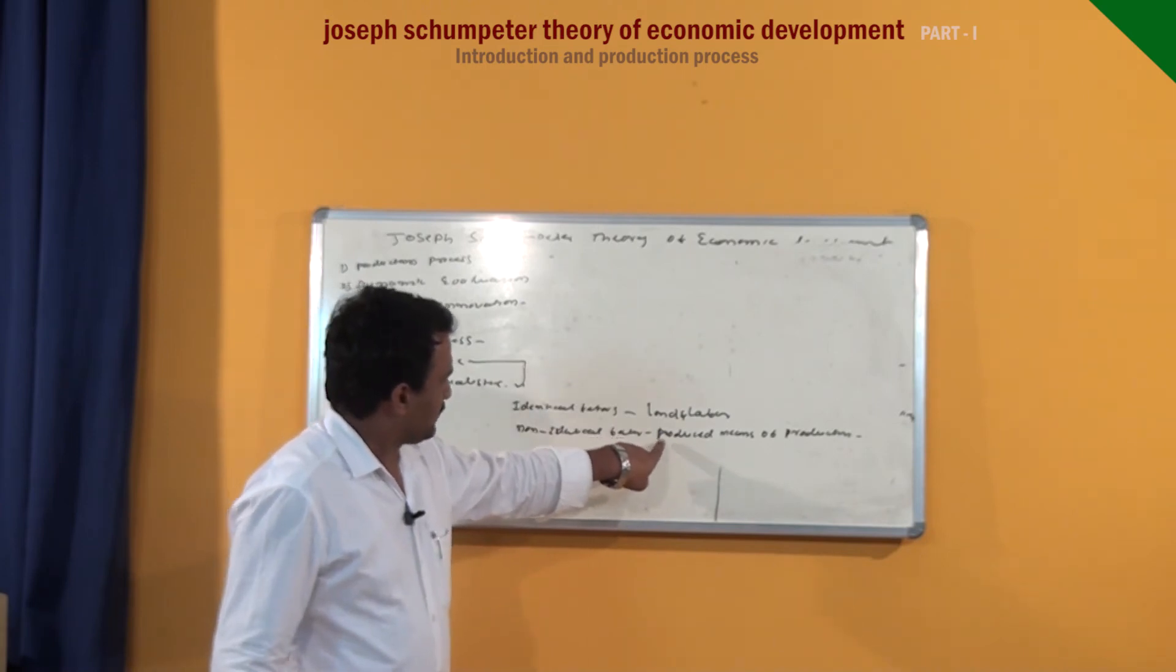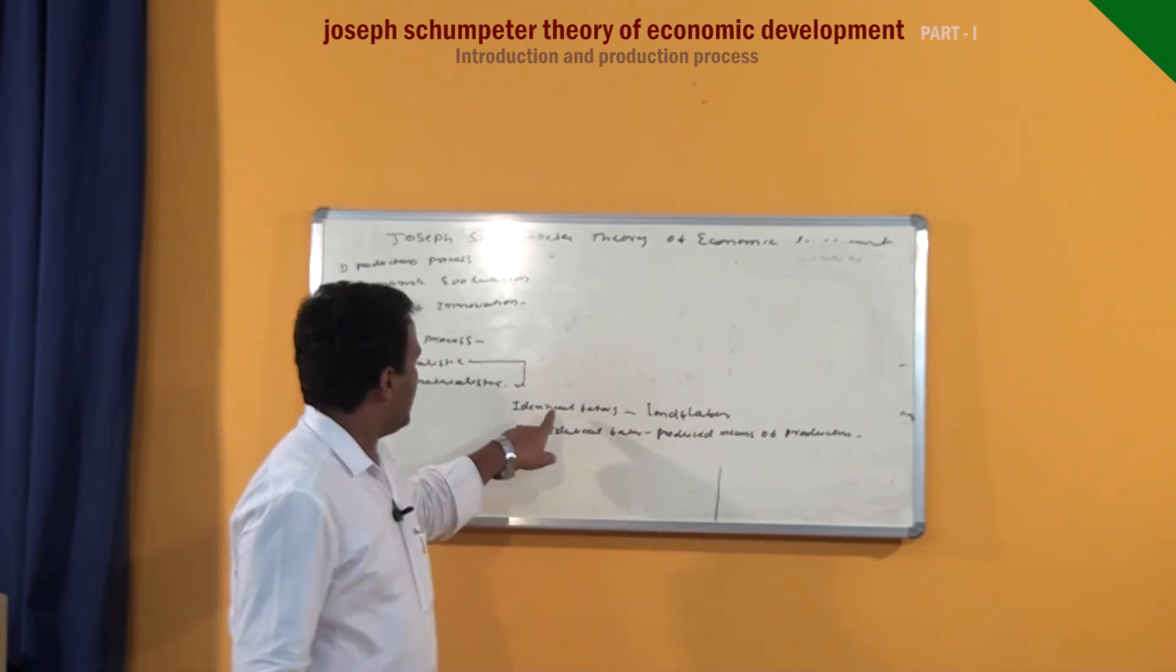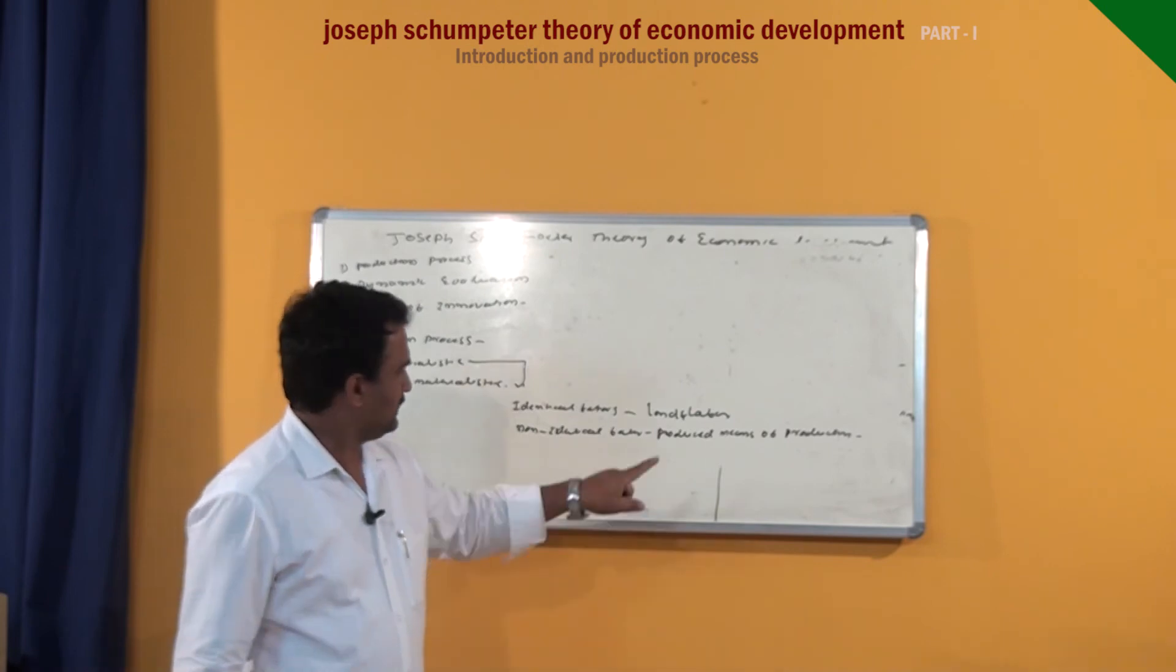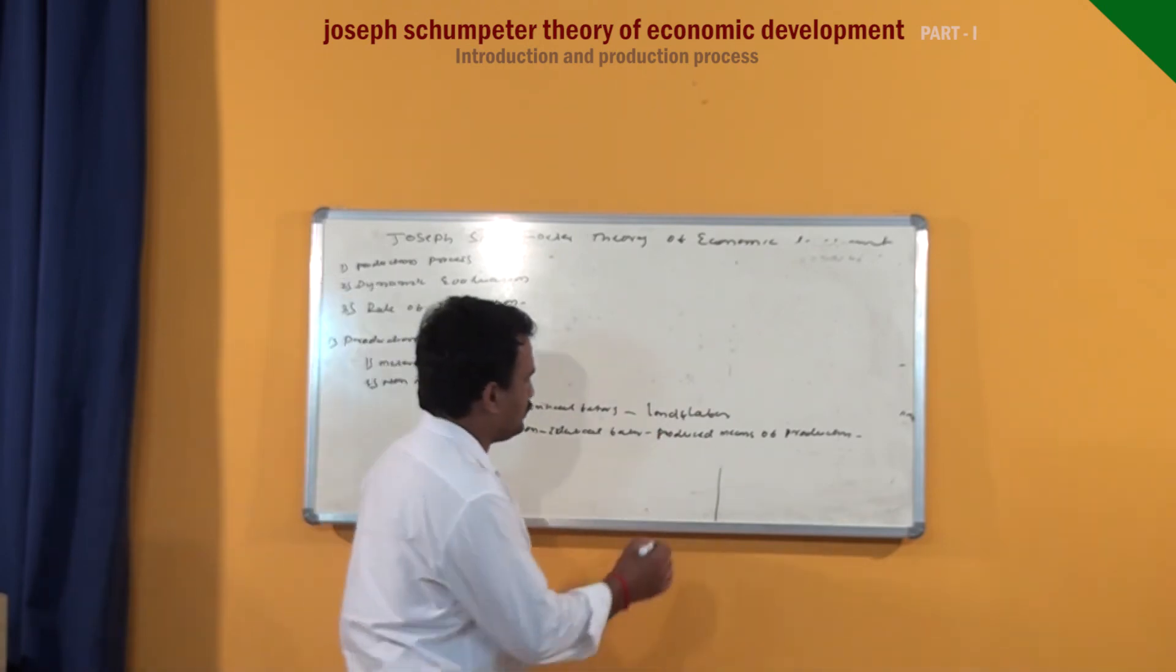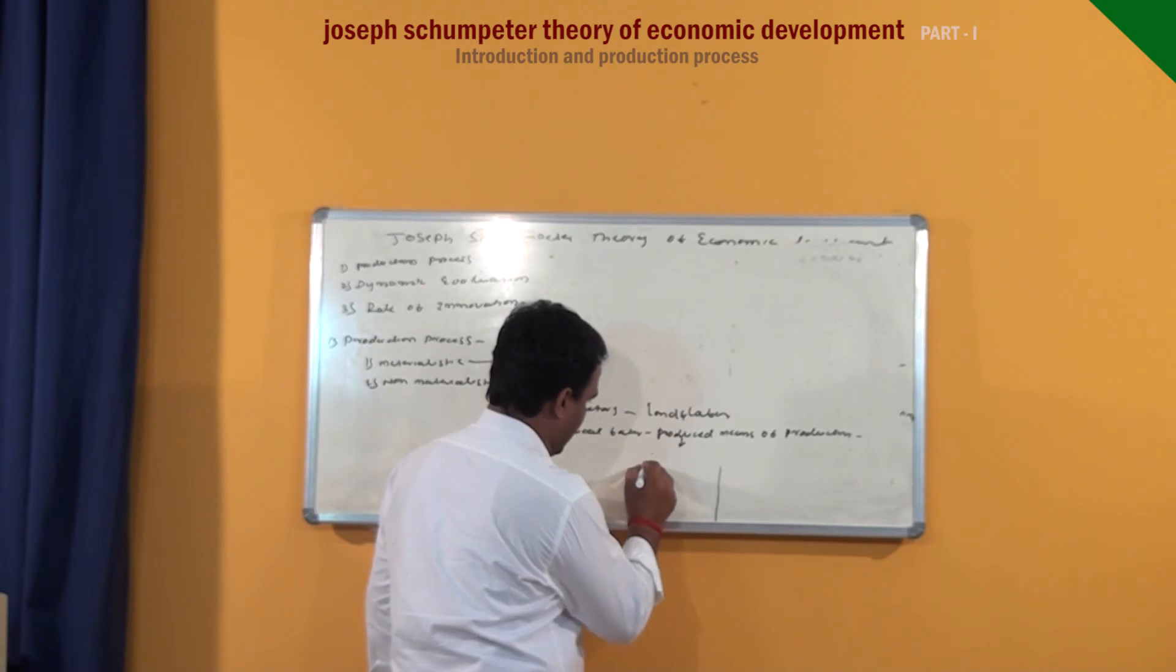He did not consider the produced means of production as identical factors because it's produced by using the two original goods: land and labor.